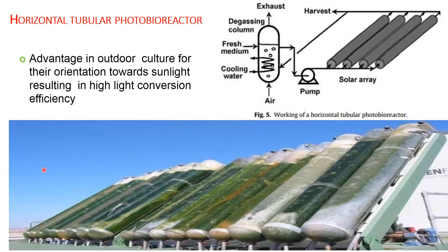The membrane inlet mass spectrometry system has been developed and incorporated into the reactor for dissolved hydrogen measurement and collection. Next is the horizontal tubular photobioreactor. It consists of horizontal tubes which hold the algal culture or which can be used for wastewater treatment. It has an advantage in outdoor culture for its orientation towards sunlight, resulting in high light conversion efficiency.